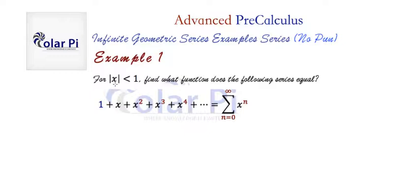And we're told that the absolute value of x is less than one, meaning the absolute value of r is less than one. So we can use the s infinity formula for an infinite geometric series where a is equal to one and r is equal to x.